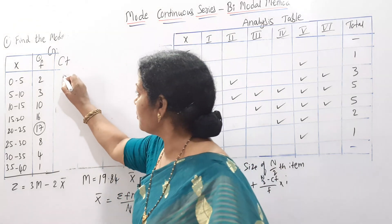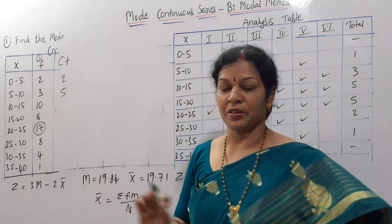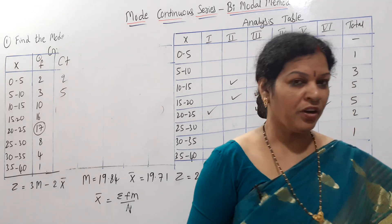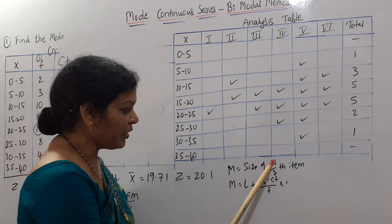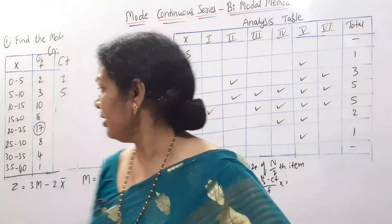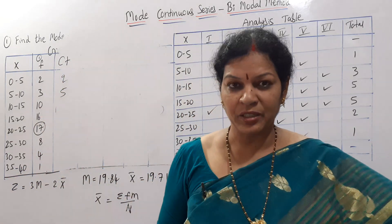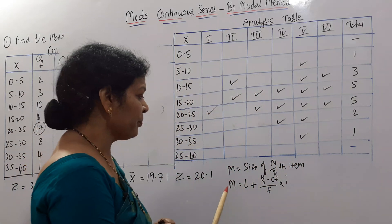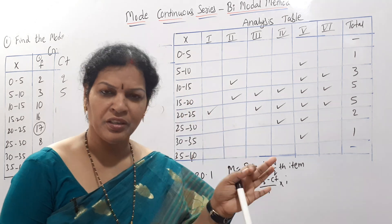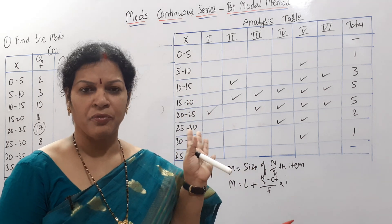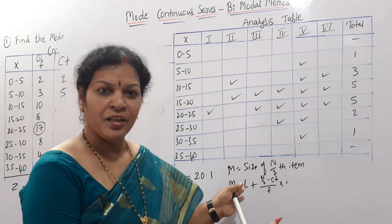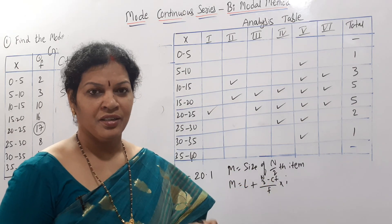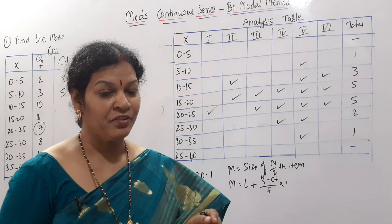We set up the cumulative frequency (CF) column: CF starts at 2; 2 plus 3 is 5. There are two formulas for median. The first is: median is equal to the size of N by 2 item, which identifies the class interval. The second formula is: Median = L + (N/2 − CF) / F × i.